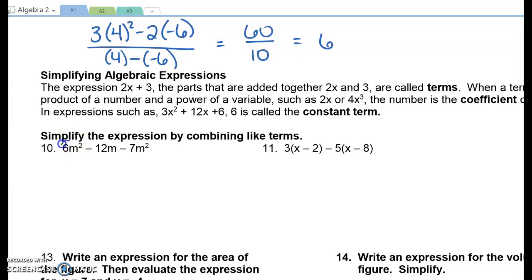We can combine 6m squared and negative 7m squared. That would be negative 1m squared minus 12m. In order for them to be like terms, they must have the same letter and the same exponent.